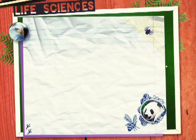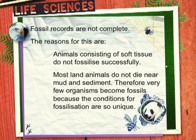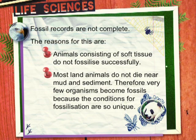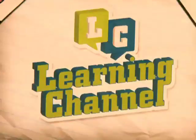The fossil record means all of the fossils that have been discovered to date. South Africa has a very rich fossil record. Fossil records are not complete and do not give a true indication of all of the species that have existed. The reasons for this are that animals consisting of soft tissue do not fossilise successfully, and most land animals do not die near mud and sediment. Therefore, very few organisms become fossils, because the conditions for fossilisation are so unique. However, all of the fossils found to date are in accordance with the theory of evolution. If these fossils are arranged from their oldest time-wise to their youngest, they provide successive evidence of changes that make up evolution.